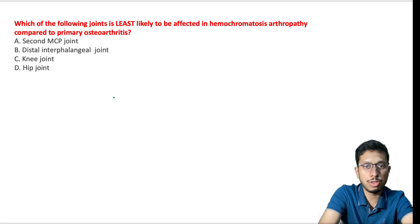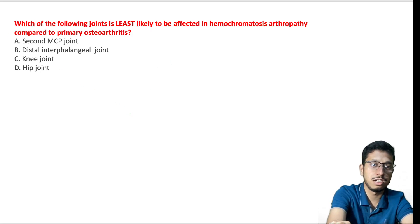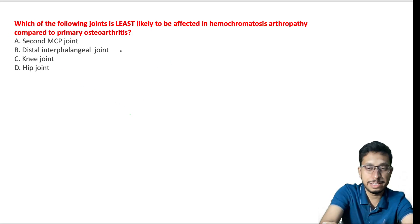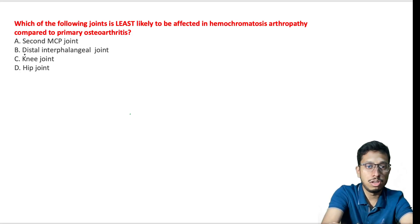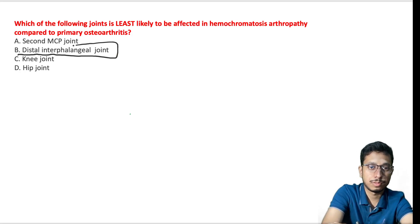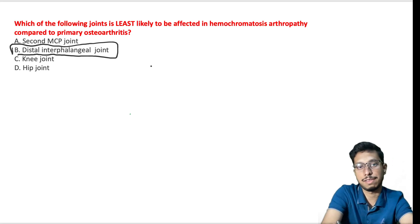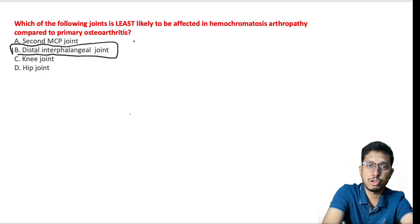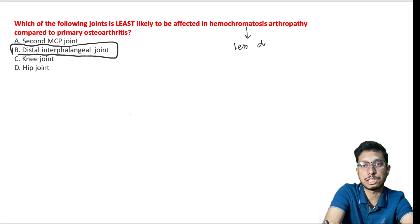The next question asks which joint is least likely to be affected. We have already discussed that this is an atypical presentation of osteoarthritis — so the distal interphalangeal joint, which is the hallmark of primary osteoarthritis, is NOT typically involved in hemochromatosis arthropathy. Also, compared to primary osteoarthritis, hemochromatosis arthropathy is less disabling in nature.